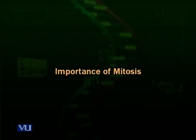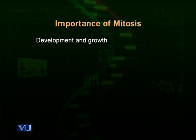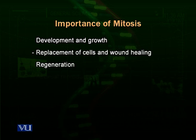Now we will talk about the importance of cell division, why cell division occurs. There are three major objectives: development and growth, regeneration, and asexual reproduction.